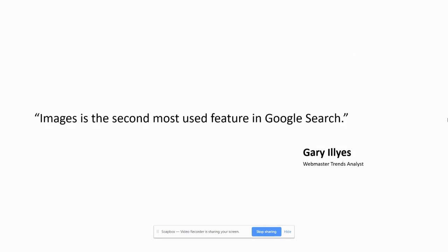Gary from Google was talking about this at an event last week. He said that image is now the second most used feature in Google search. So after the normal Google.com blue links, the second most used feature is the image portion of search.